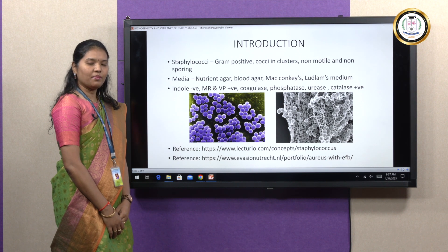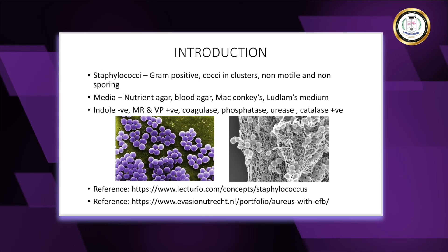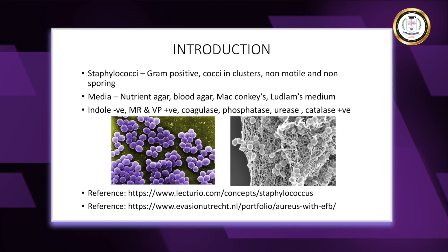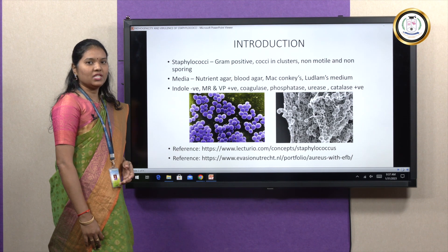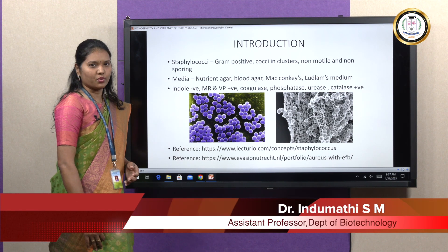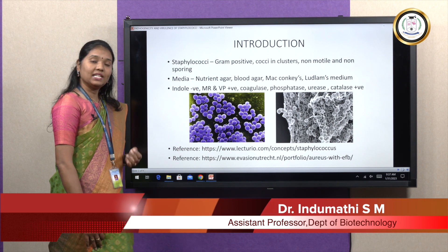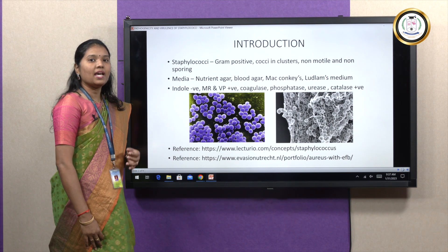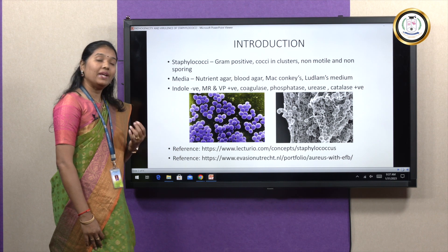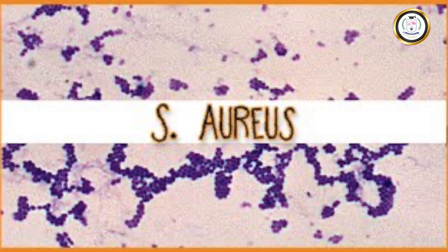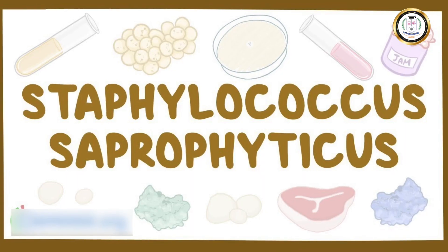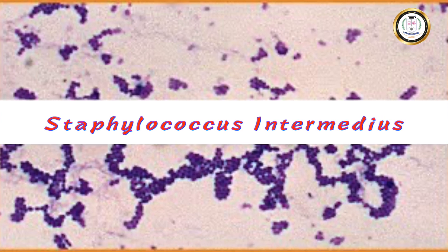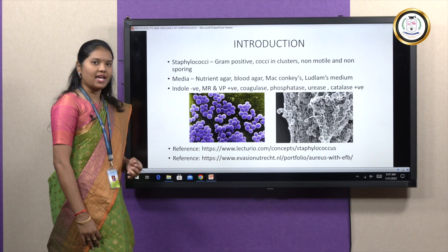Staphylococci is a gram-positive bacteria, cocci in shape — that is spherical in shape — arranged in grape-like clusters. They are non-motile and non-sporing, which means they do not move and do not produce spores. Staphylococci is classified into 24 different species; the most medically important species is Staphylococcus aureus. Other species include Staphylococcus epidermidis, Staphylococcus saprophyticus, Staphylococcus hyicus, Staphylococcus intermedius, and Staphylococcus citrius.